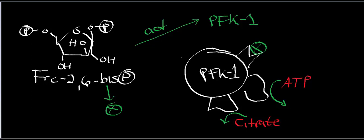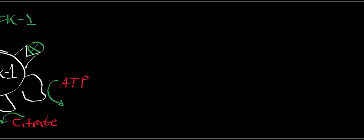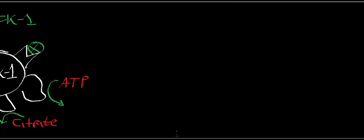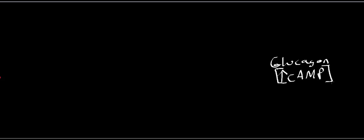Now let's talk about cyclic AMP's effect. A large part of the regulation of glycolysis versus gluconeogenesis is hormonal. One of those regulations is by glucagon. Glucagon has a specific G-protein coupled mechanism — when glucagon binds to its receptor on a cell, it increases the concentration of cyclic AMP.